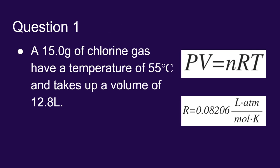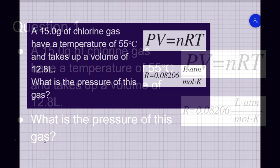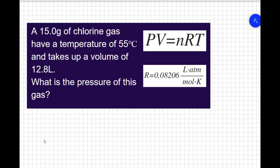Given 15 grams of chlorine gas at a temperature of 55 degrees Celsius and a volume of 12.8 liters, what pressure is being exerted by the gas? Before jumping into the ideal gas law, there are a few things to consider.